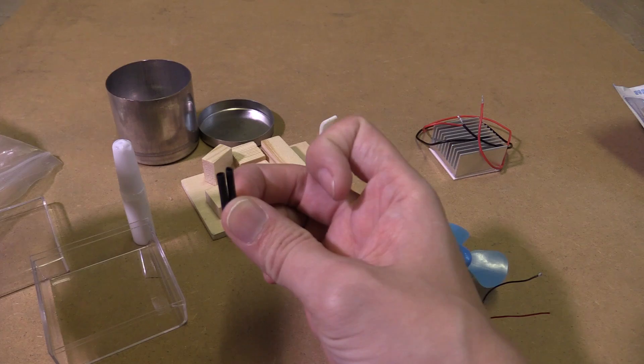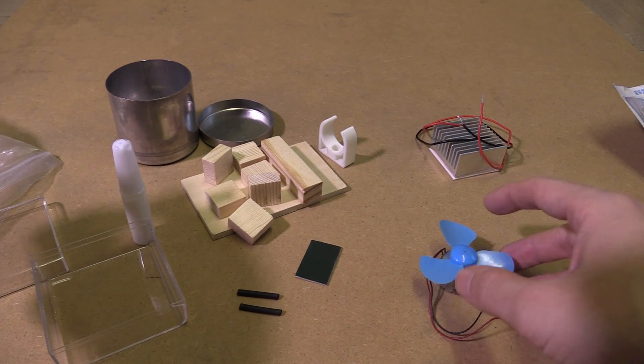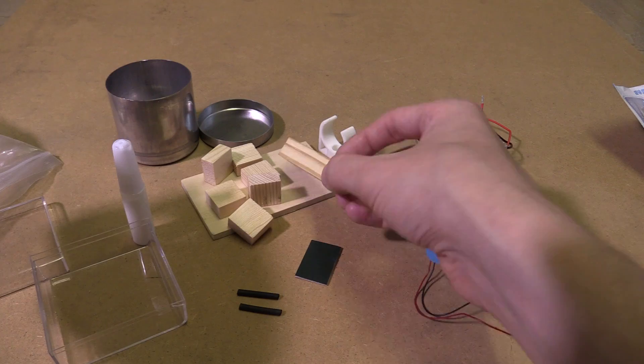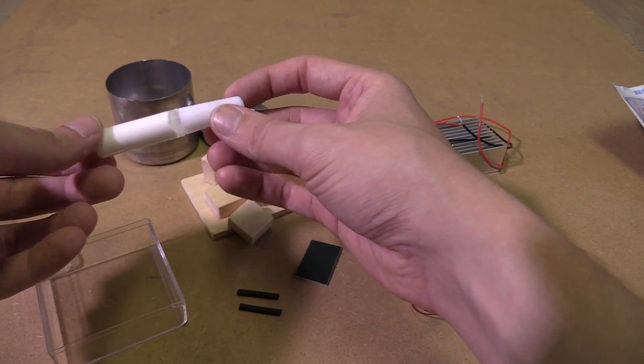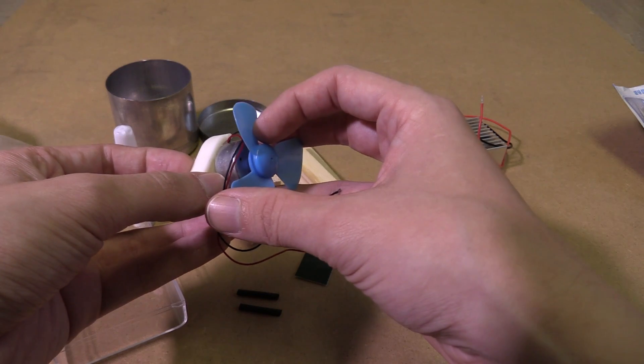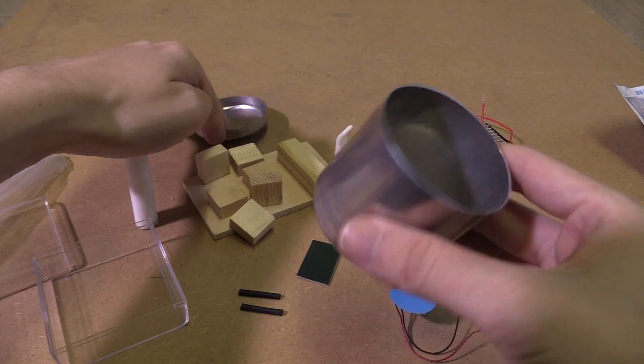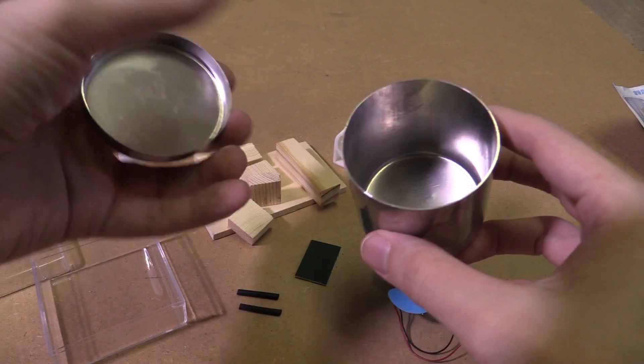Then we've got two pieces of heat shrink tubing, a double-sided sticky pad. We've got a bunch of wooden blocks and what I assume is wood glue. And then we've got a little plastic thing here which looks like it will hold the fan motor. And then lastly we've got this metal tin which I assume we're going to put hot water or a candle in or something like that.